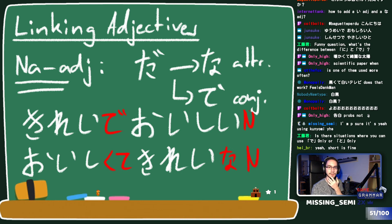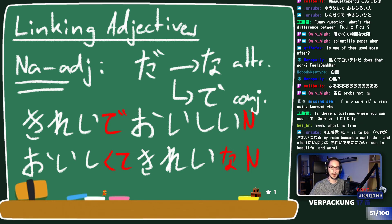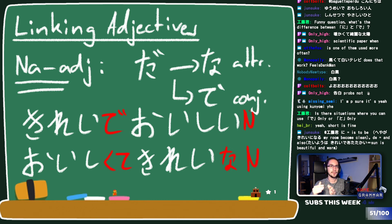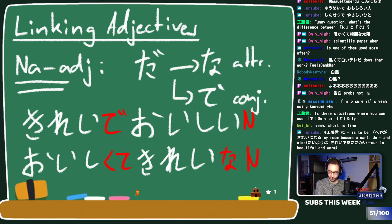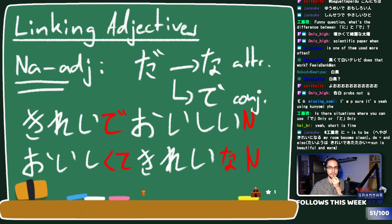Someone asked about the difference between ni and de. It really depends on context because both have widely different usages. In the context of location marking: ni marks location of existence, usually with verbs like iru or aru - where something exists. De marks the location of an action - where you do something. So you'd say daigaku de benkyou suru - study at the university - using de for the action's location.